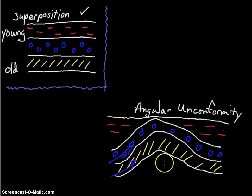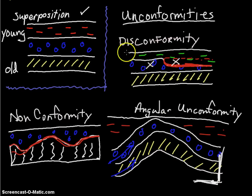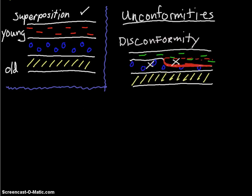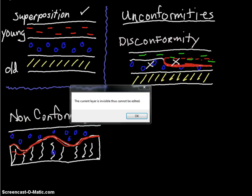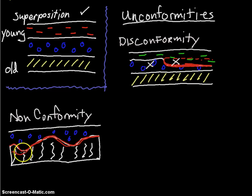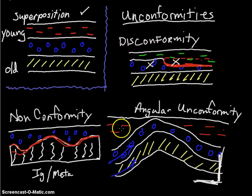Here we have all three now. We have the first one, the disconformity, where there's weathering and erosion washing away part of the layer. We have the nonconformity where we have a sedimentary layer on top of an igneous or metamorphic. And then finally the third unconformity is an angular unconformity where we have layers that are at an angle because of mountain building or folding or faults moving the plates, and we have an angled set of layers.